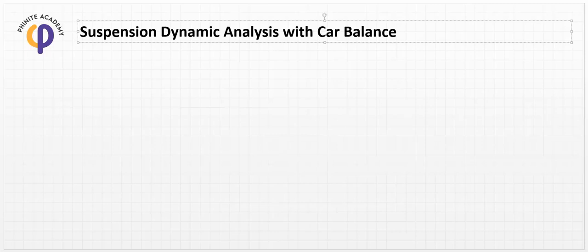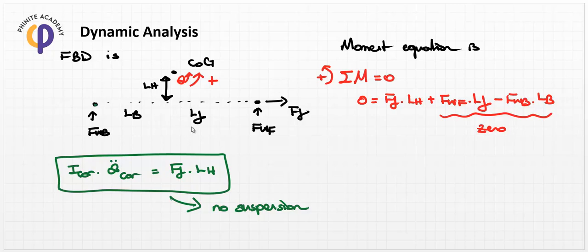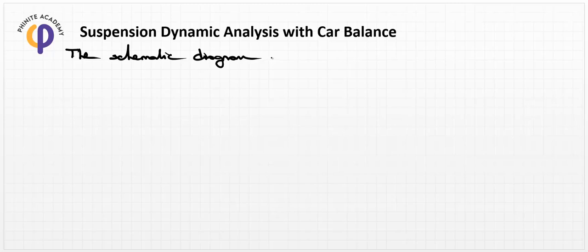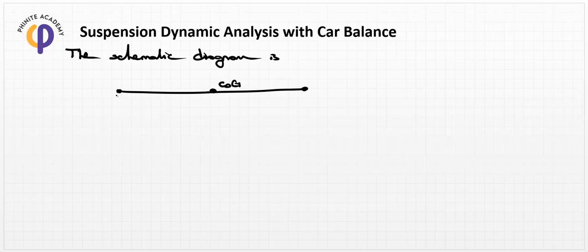In the previous lesson we obtained the model of the car body, but there was no suspension system. In this lesson we will obtain the suspension design. The schematic diagram shows a body with a center of gravity position, and the system includes two suspension elements with stiffness factor, damping ratio, and wheel dynamics.